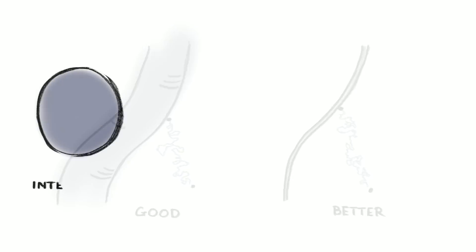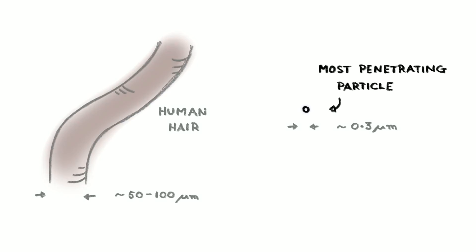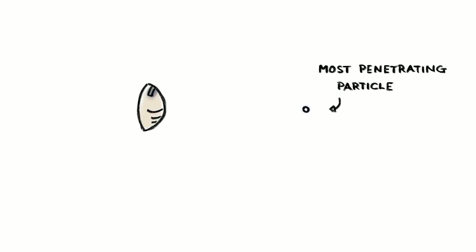And then you have the middle-sized particles, the ones that are too small to be captured because of their inertia, but too large to be captured through diffusion. These particles are usually a little smaller than a hundredth the width of a human hair, and they are the hardest to remove. This is why respirator and face mask manufacturers test the efficiency of their products with particles in this size range, those particles that are just the right size to slip through and make it to the other side.